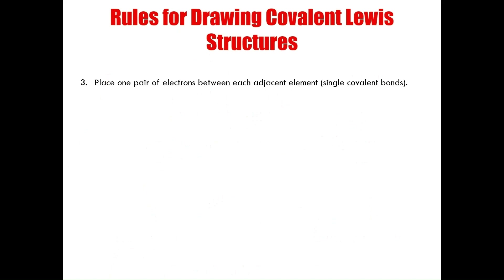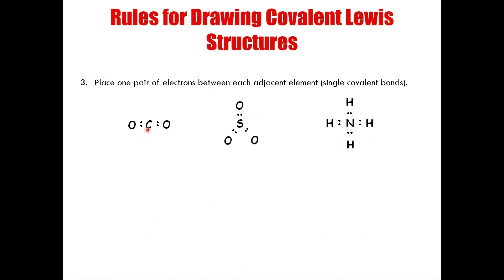The third rule is to place a pair of electrons between each adjacent element, representing the single bonds formed between atoms. For carbon dioxide, I place a pair of electrons between each peripheral oxygen atom and the central carbon atom on either side. I did the same for sulfur trioxide and for the ammonium ion.